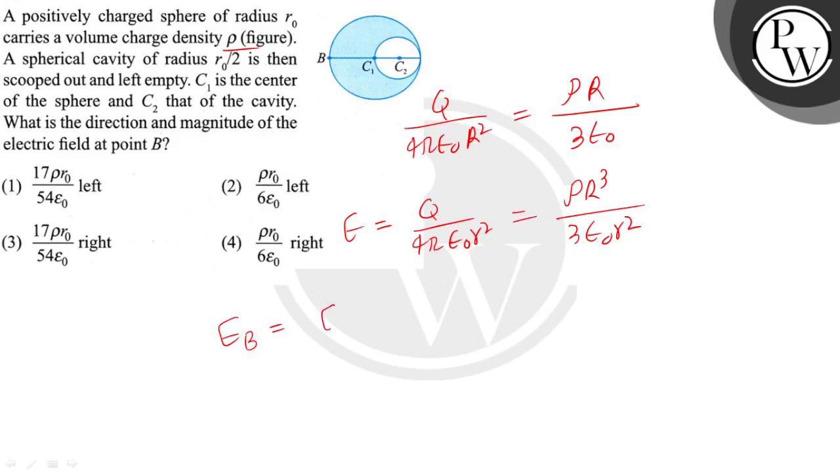Eb equals E whole sphere minus E cavity. So let's put these values and see what we get: ρr₀/(3ε₀).